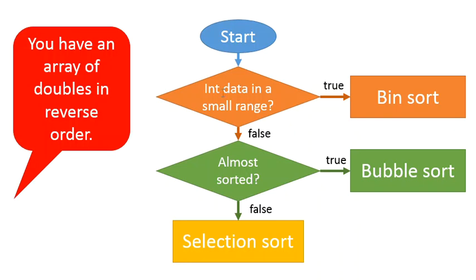So let's say we have an array of doubles that's in reverse order. Do we have integer data falling in a small range? No, they're doubles. Is it almost sorted? Well, no, it says it's in reverse order. So no, it's not almost sorted. So can't use bin sort, can't use bubble sort. We're going to use selection sort. Good luck with your sheet.